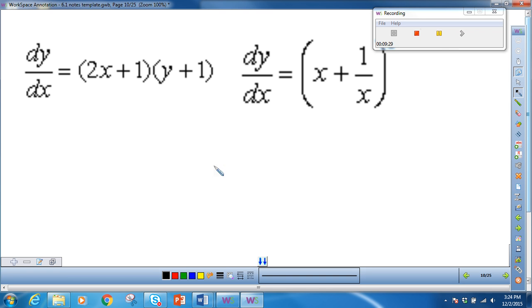This one, we do have a y. So we're going to have to separate these variables. So I get dy, bringing the y plus 1 to the other side, is equal to 2x plus 1 dx. Now that looks difficult to do, but we can remember that if we make u equal to y plus 1, then we'll have du over u, which is just the natural log of u. So we can just write this as the natural log of y plus 1 is equal to x squared. The 2s would cancel, so it would just be x squared plus x plus c.